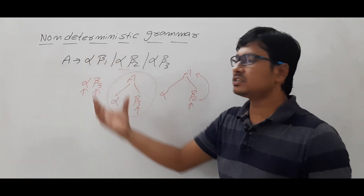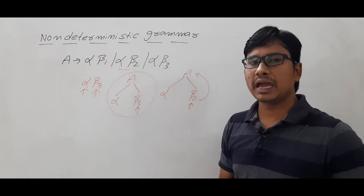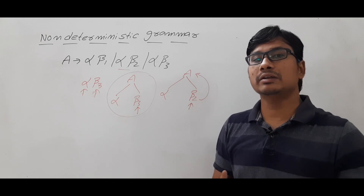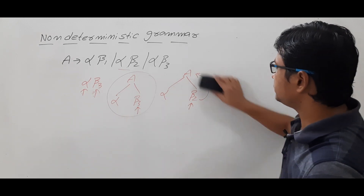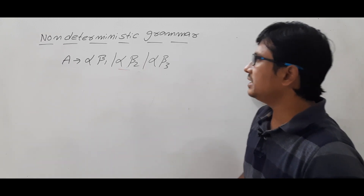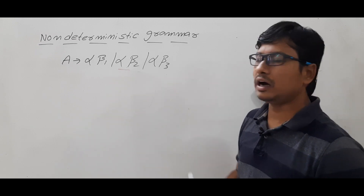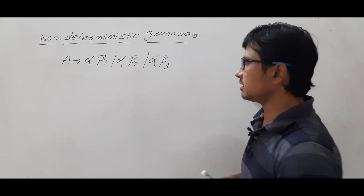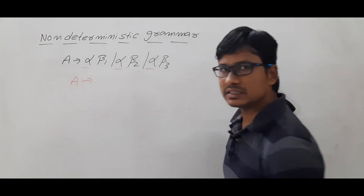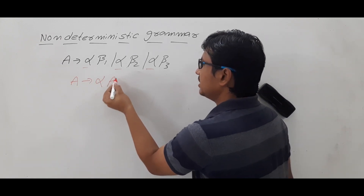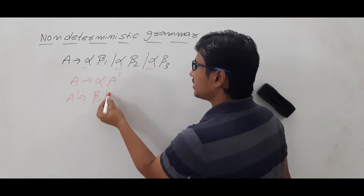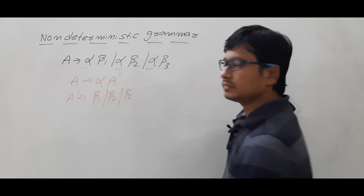So if this non-deterministic grammar is creating backtracking, how can we convert it into an equivalent — and that word equivalent is very important — deterministic grammar? We will discuss that now. A determines αβ1, αβ2, αβ3. If you look at each production, α is common. So take α as common and you can write it as: A determines α A-dash, and A-dash determines β1 or β2 or β3.